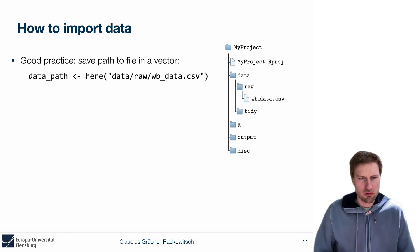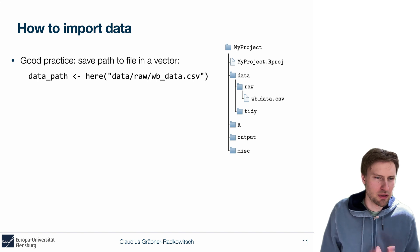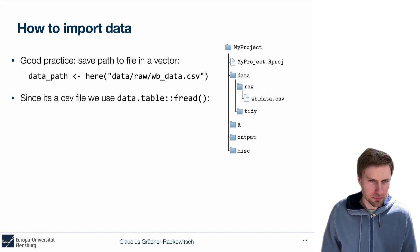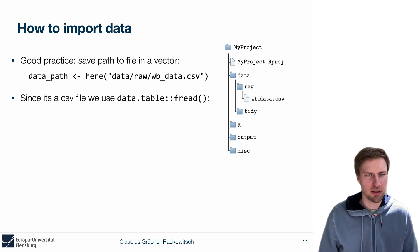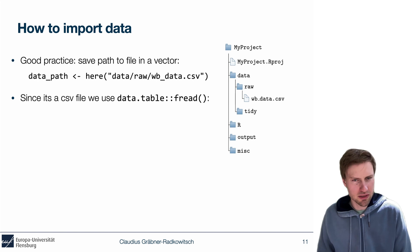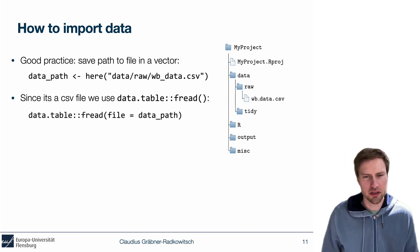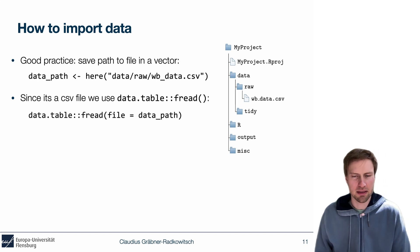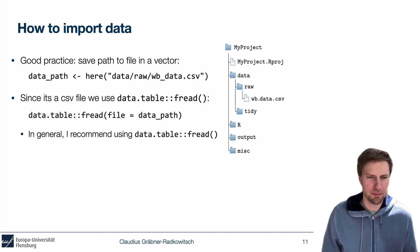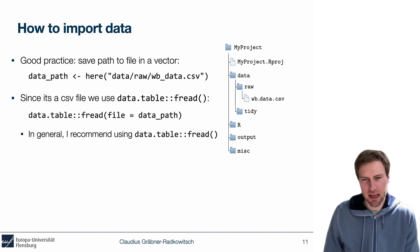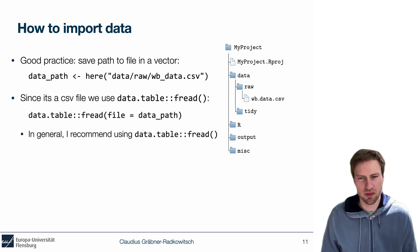We save the result — here() returns a character vector — under a meaningful name such as data_path. Then we call the function we need to import the data. Since we're dealing with a CSV file, we use fread from the data.table package. The easiest way to use fread is to call it with the argument file set to the data_path we defined before. In this case, R will import the data using all the default options provided by fread.